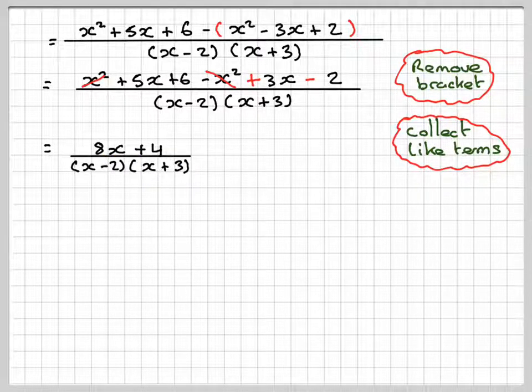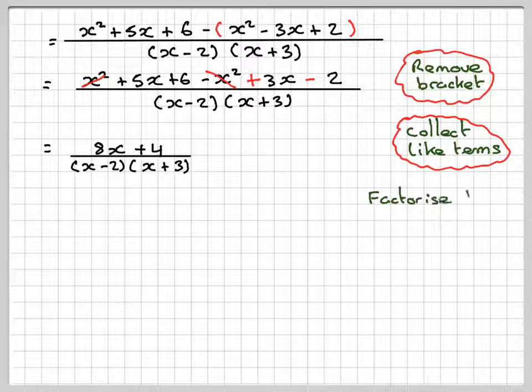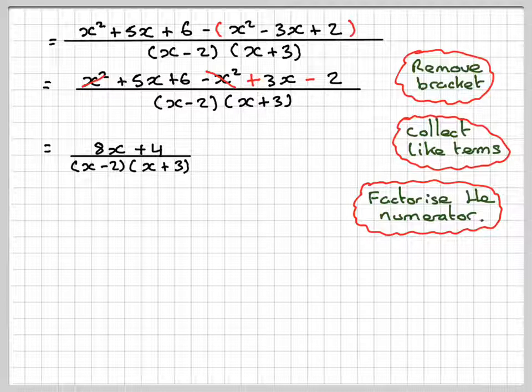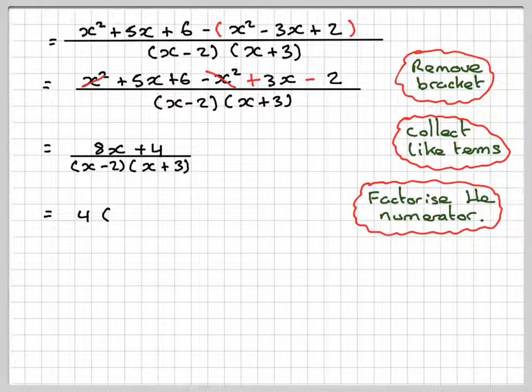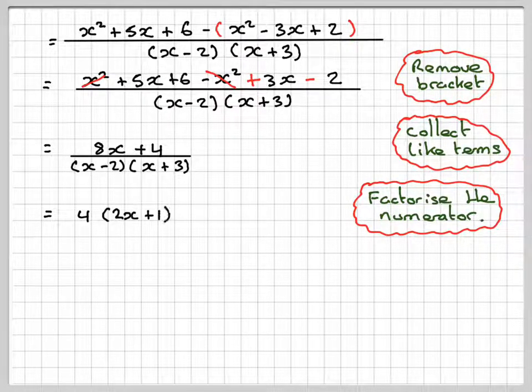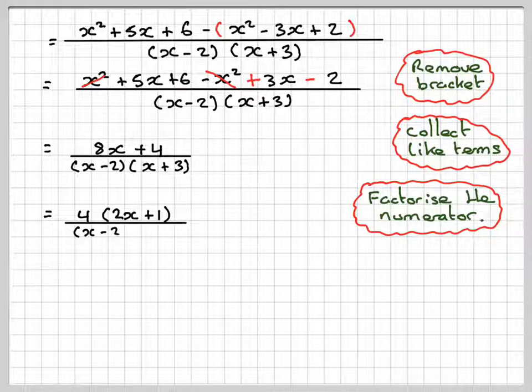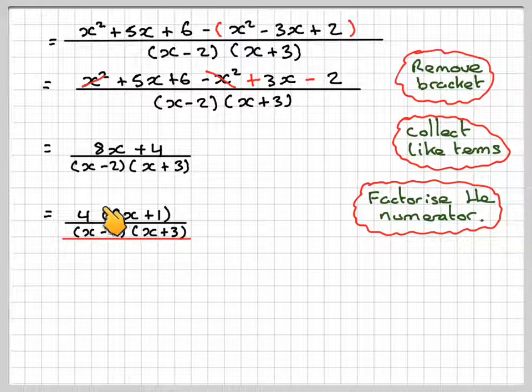So take that out and we're going to have 2x plus 1 over x minus 2x plus 3. And that's going to be our final answer for this question.